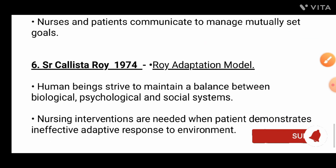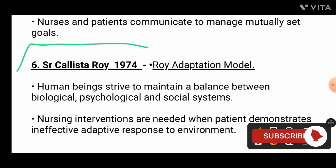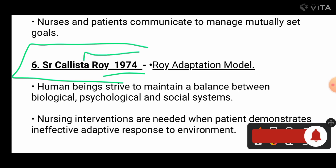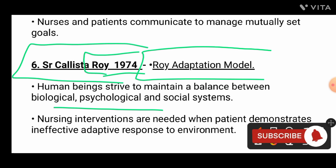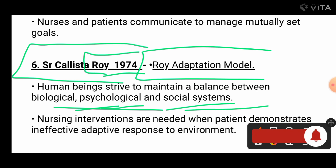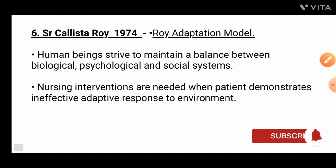Next is Sister Callister Roy, 1974 — the Roy Adaptation Model. You can remember it easily because of the name Roy. In this model, the human being strives to maintain balance between biological, psychological, and social systems. Nursing interventions are needed when the patient demonstrates an ineffective adaptive response to the environment.